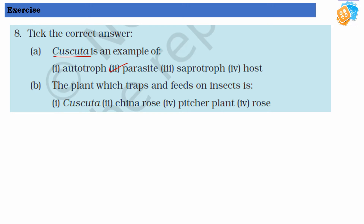B. The plant which traps and feeds on insects is an Insectivorous plant, and the specific example is Pitcher plant. The term Insectivorous plants is used for all plants that trap insects. Pitcher plant is a specific example which comes under Insectivorous plants.